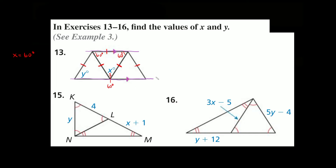Whenever you have two parallel lines being intersected by another line, they create special angles. We essentially have two parallel lines and a transversal. The transversal creates special angles with the parallel lines — in this case we have alternate interior angles. This angle right here and this angle right here form a pair of alternate interior angles, and alternate interior angles are always congruent. So if this angle is 60 degrees, this angle over here is also 60 degrees.